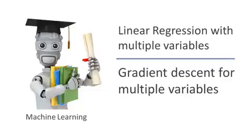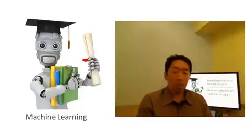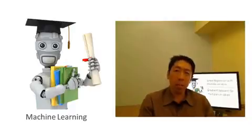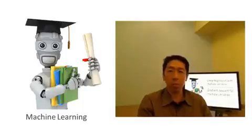In the previous video, we talked about the form of the hypothesis for linear regression with multiple features, with multiple variables. In this video, let's talk about how to fit the parameters of that hypothesis. In particular, let's talk about how to use gradient descent for linear regression with multiple features.